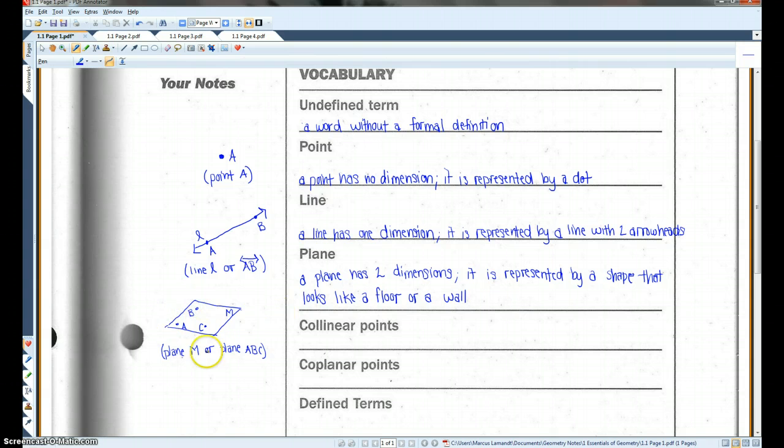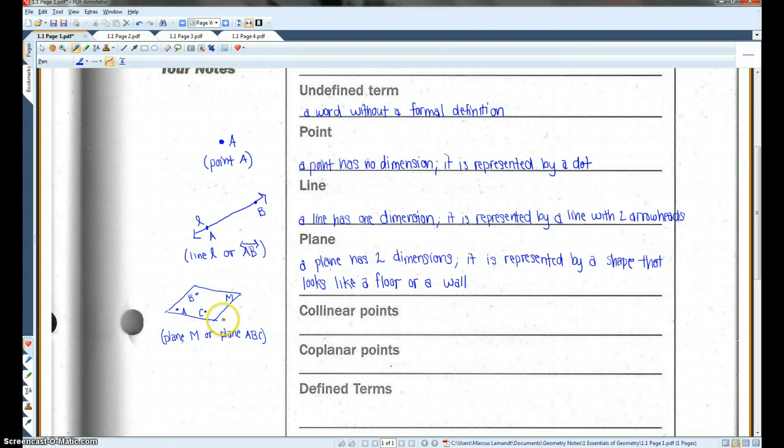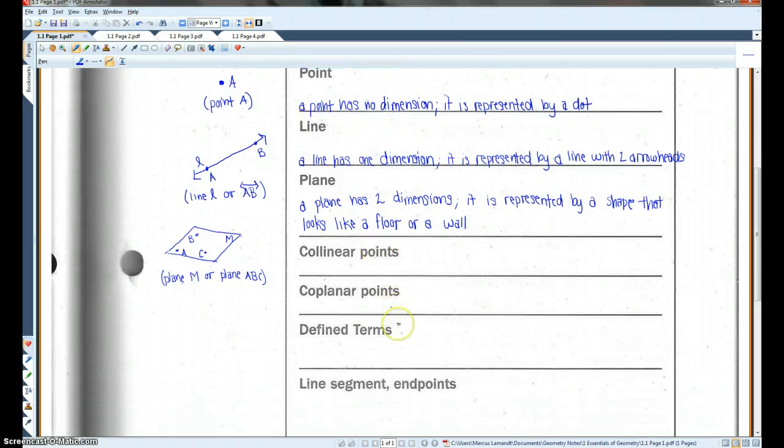Now, a plane, even though it looks like a square that's only a couple inches big, this plane is supposed to extend in all directions infinitely. So if you imagine, like, in our classroom, the floor would be a plane, or a wall would be a plane, if the wall continued up and up forever and ever.